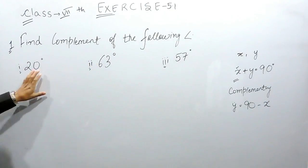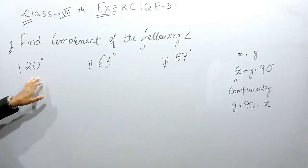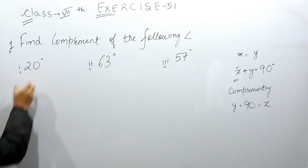This means that if we are given one angle, then the second angle will automatically be 90 minus the first angle.